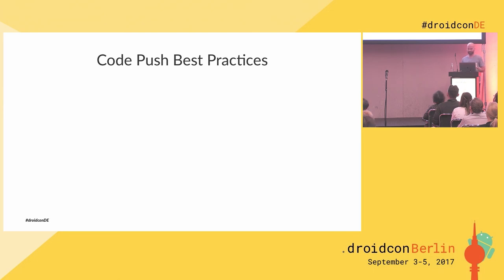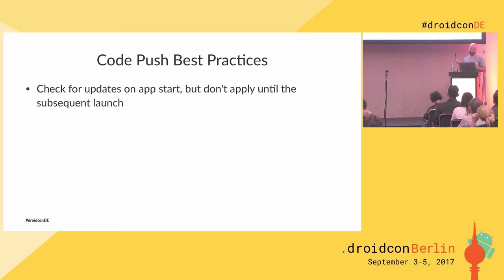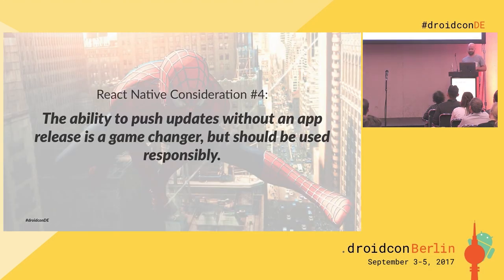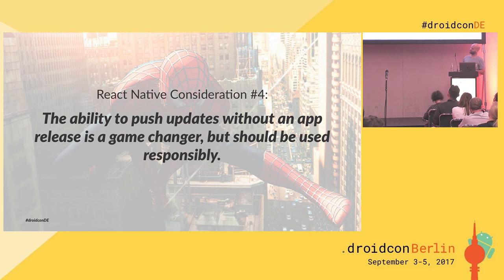They outline some best practices for using Code Push because it's a pretty heavy hammer. In general they recommend you check for updates on app start but don't apply them until the subsequent session — the idea is you're not surprising the user. You want to test your updates thoroughly. There is rollback functionality — it's automatic, and if they detect that an update failed it'll roll back to a previous version. So, this brings us to our fourth consideration: pushing app updates without an app release is obviously a great power but it should be used responsibly — the so-called Spider-Man rule.